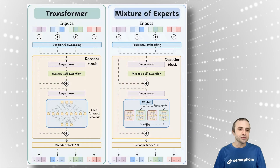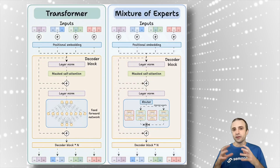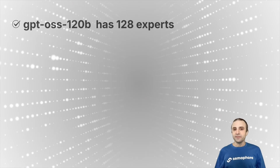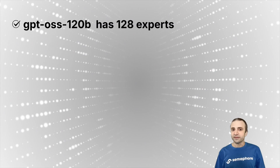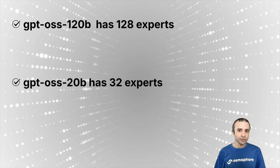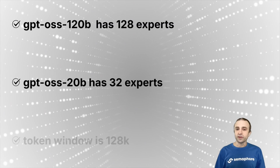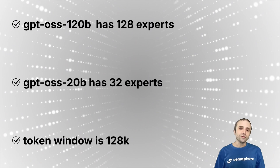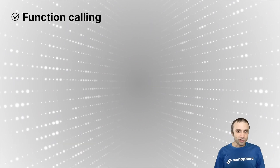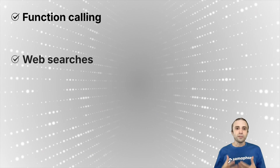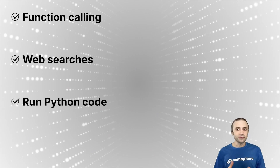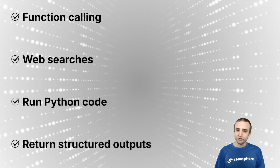They have a mixture-of-experts architecture that combines multiple trained experts in the same model. The big model has 128 experts and the smaller one has 32 experts. Both have a token context window of 120k tokens. They support function calling — you can plug in a browser to run searches, run Python code, and return structured outputs.